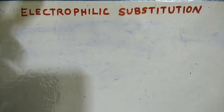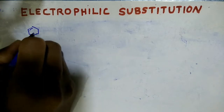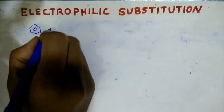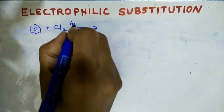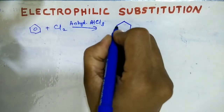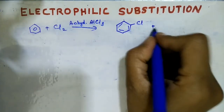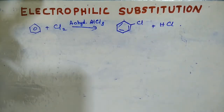Welcome back. Today we are going to learn electrophilic substitution reaction. Arenes undergo electrophilic substitution reaction. An example for arenes is benzene. So benzene, when reacted with chlorine in the presence of a Lewis acid — that is anhydrous AlCl3, aluminium chloride — you are getting a monosubstituted compound plus HCl. Here, chlorobenzene is obtained. This is an example of electrophilic substitution reaction.